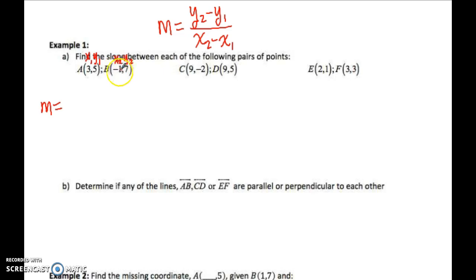So this point is x1, y1, and this point has the second coordinate for x and the second coordinate for y. So your subscript is which coordinate it is. So I'm going to take the second coordinate of y, which is 7, minus the first y coordinate, which is 5, and I'm going to take the second x coordinate, which is negative 1, and subtract the first x coordinate. And now you just do the math. 7 minus 5 is 2. Negative 1 minus 3 is negative 4. Therefore, the slope between points A and B is negative one-half.